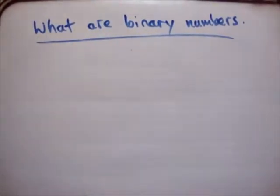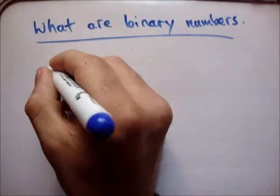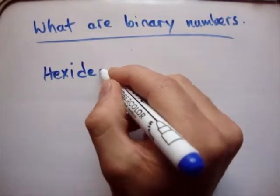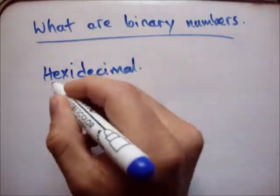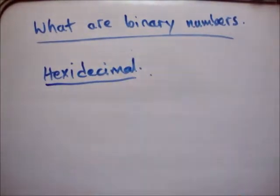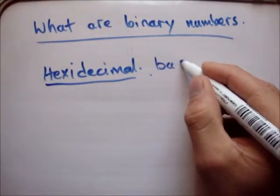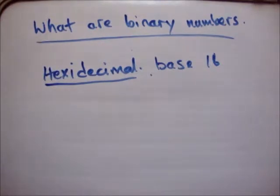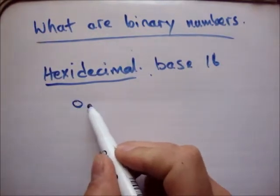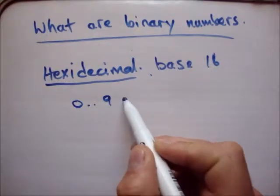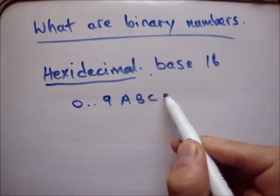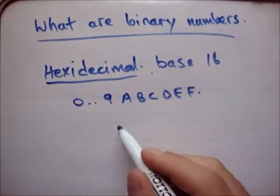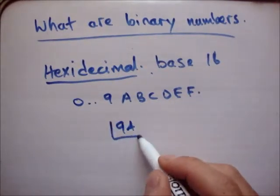Similarly, there are other numbering systems. There's one called hexadecimal. Hexadecimal is base 16, so it uses 16 digits or characters in order to make up every number. Those are 0 up to 9, and then it uses A, B, C, D, E, and F. So for example, if you're doing hexadecimal, a number might be 9A.